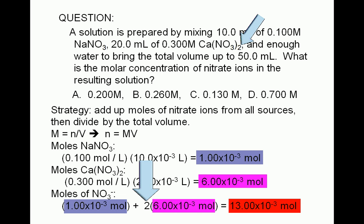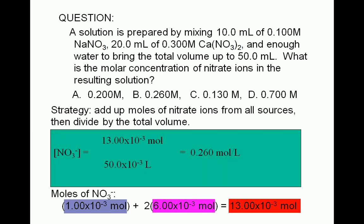All we have to do now is to divide the total moles of nitrate ions by the total volume in liters. 50.0 milliliters is equivalent to 50.0 times 10 to the negative 3 liters. This gives us a molar concentration of 0.260 for nitrate ions. And the correct answer is choice B.